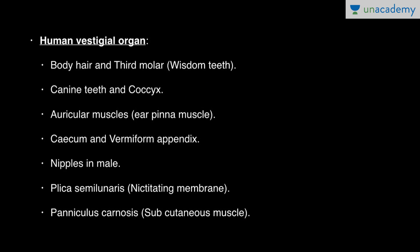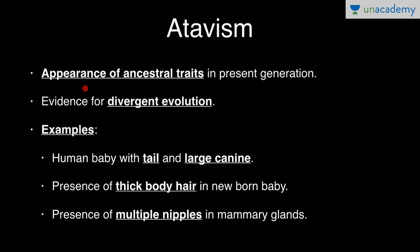Atavism is the appearance of ancestral traits in the present generation. Ancestral traits that were lost during development reappear in some individuals and this is referred to as atavism. It is also evidence for divergent evolution. Examples include a human baby born with a tail — representing our ancestor's tail — large canines representing ancestry with carnivorous organisms, presence of thick body hair in a newborn representing ancestry to apes, and presence of multiple nipples and mammary glands.